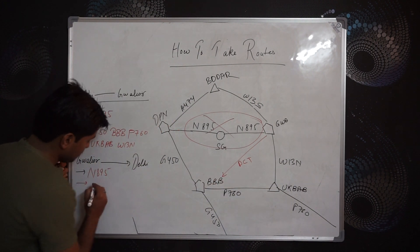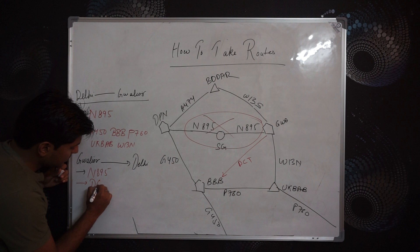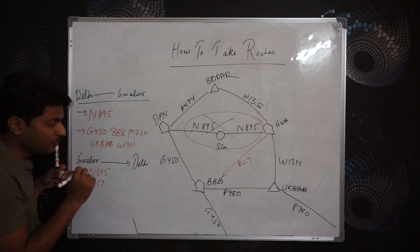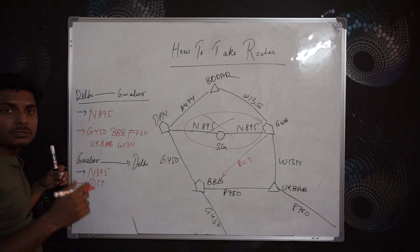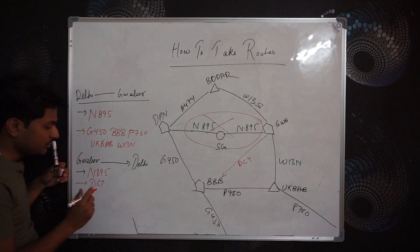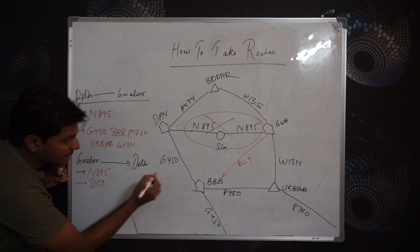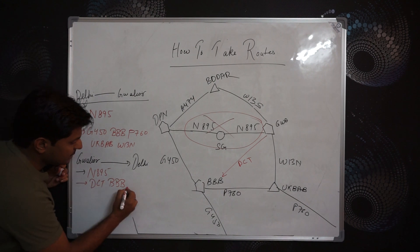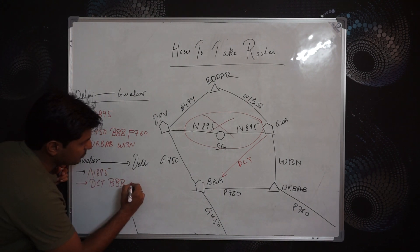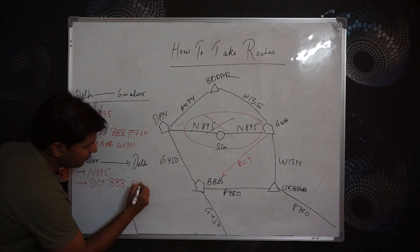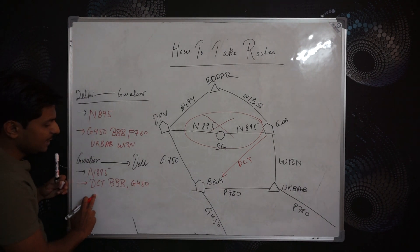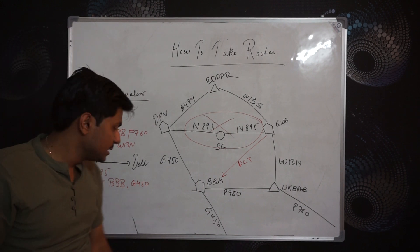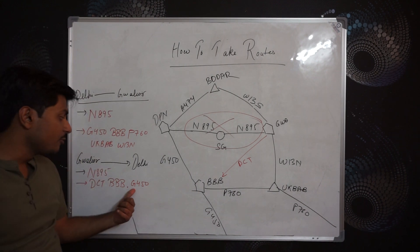DCT is how you write it. You will find DCT in your exam question paper or in the standard format. Direct up to what? Bravo Bravo Bravo. Then from Bravo Bravo Bravo you are taking GOL 450. So the route will read: DCT Bravo Bravo Bravo GOL 450. That's it.